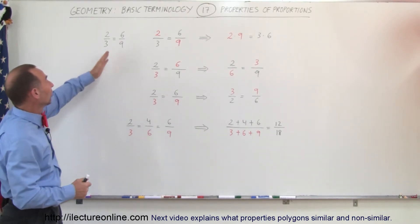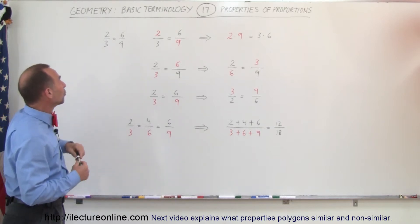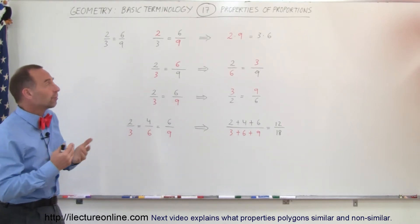Again, a proportion is two, what we call ratios, set equal to each other in the form of an equation.